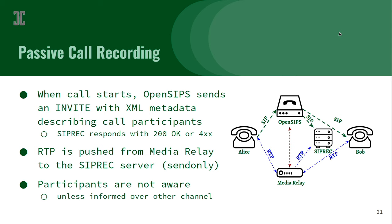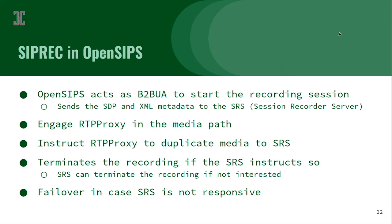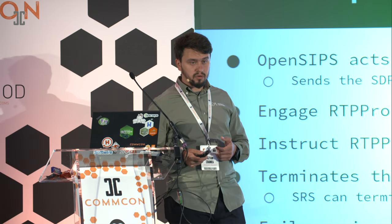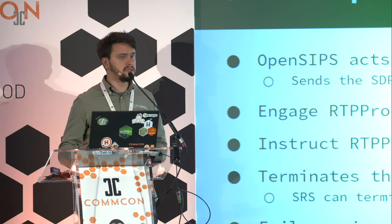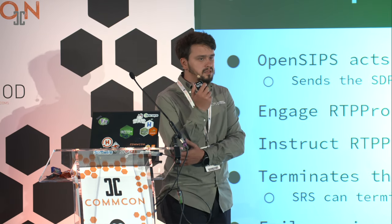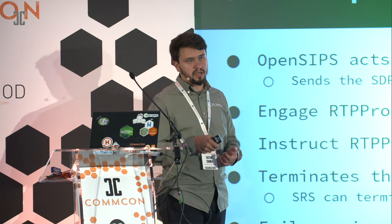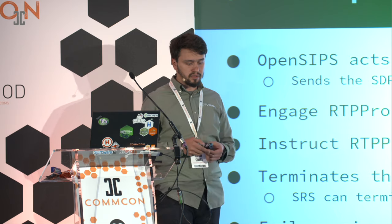In this scenario, participants are not necessarily aware that they are being recorded, unless law regulations enforce you to play an announcement saying that the call will be recorded and giving them the option to close the call. OpenSIPS controls the RTP proxy in order to send or stop sending media to the endpoint, and is also able to terminate the recording if the recorder decides so — for example, if it decides mid-call it's not interested in continuing.